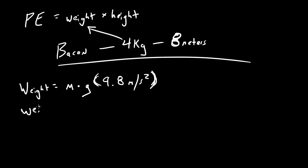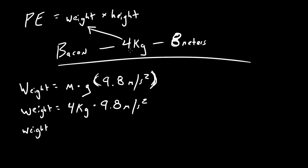So the weight of this bacon on earth: four kilograms times gravity, which is always 9.8 meters per second squared on earth. Therefore, the weight of a four kilogram piece of bacon is 39.2 newtons. That's why you weigh less on the moon — since gravity is the factor, on earth it's greater than on the moon. One newton equals one kilogram times meter per second squared, and that's why newtons and weight are interchangeable — because weight is actually a force: how strongly gravity is pulling you towards the center of the earth.